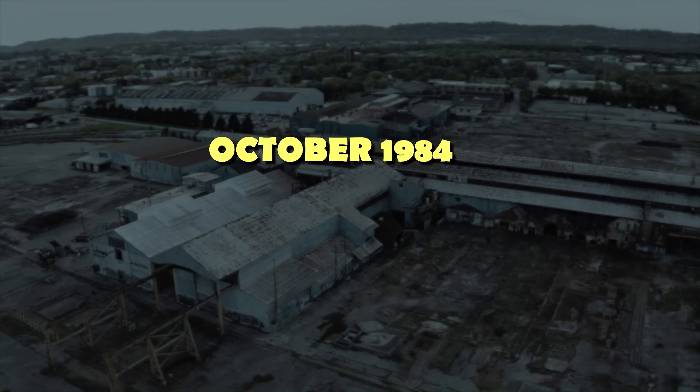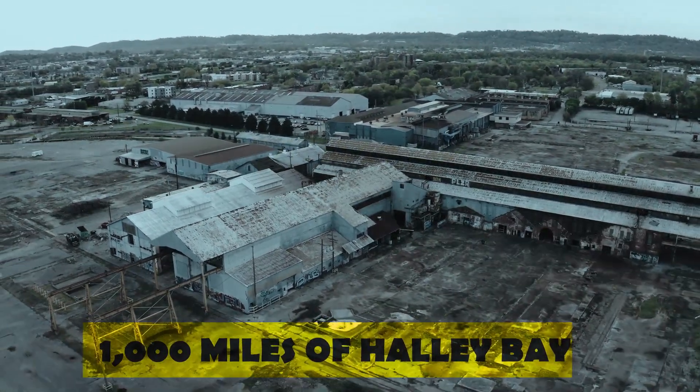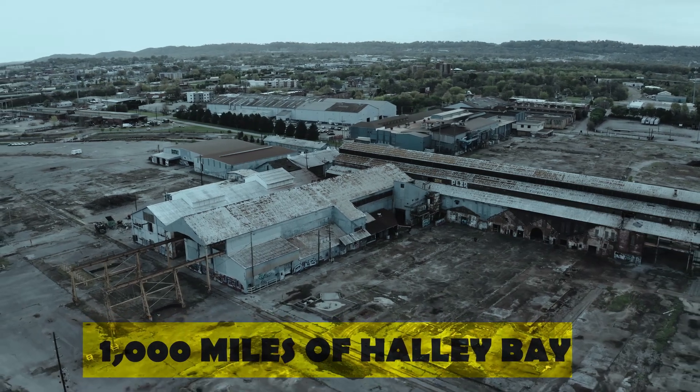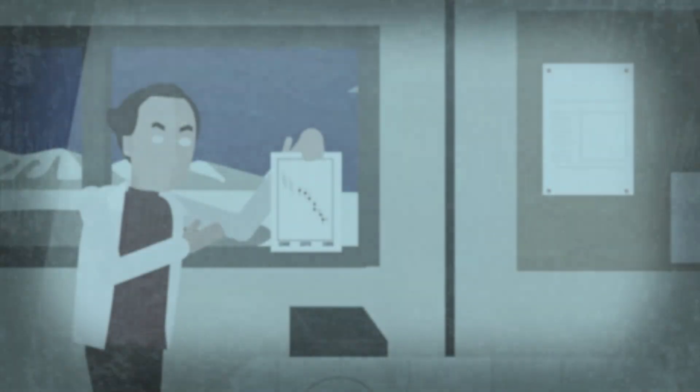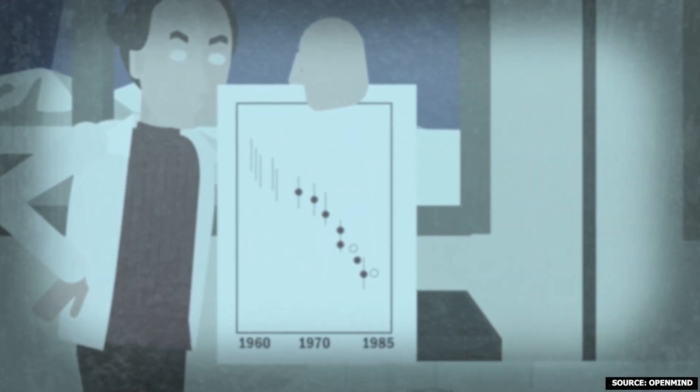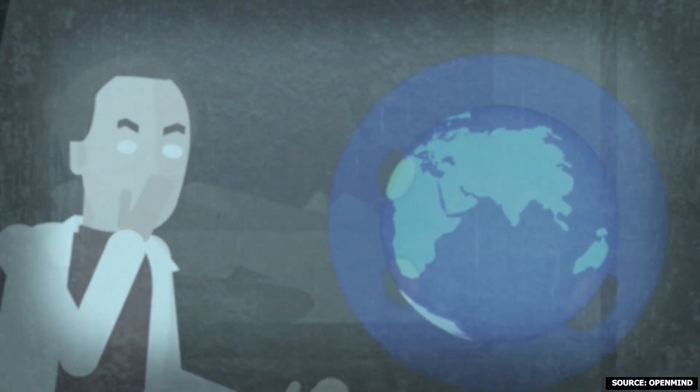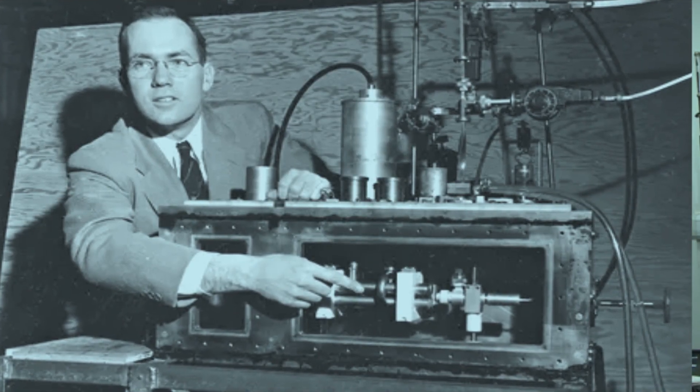In 1984, desperate for clarity, Joseph shifted his research location, traveling a thousand miles to a new research station. The readings here, however, mirrored the haunting decline. Confronted with three consecutive years of drastic ozone depletion, Joseph could no longer ignore the implications.